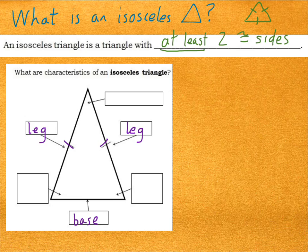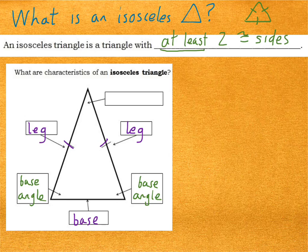There are also three angles in the isosceles triangle. The angles that are next to the base are called base angles — we have one base angle here and one base angle here. The other angle is called the vertex angle.